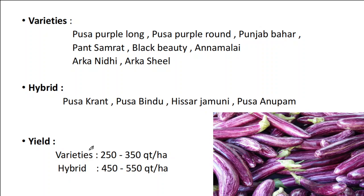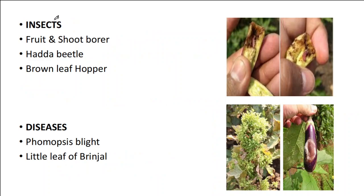Now let us see the major insect pests and diseases of Brinjol. Fruit and shoot borer is a very important pest. Its scientific name is Leucinodes orbonalis, belonging to the family Pyralidae. It is the major pest, causing dead heart in young plants by damaging the stem. At the maturity stage, the fruit and shoot borer makes boreholes and enters into the Brinjol, damaging the entire vegetable.